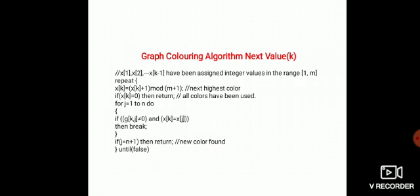After that, if j of k and i not equal to 0 and x of k equals x of j, then you have to check whether edges and nodes of k and j are assigned the same color. If j equals n plus 1, it will return that a new color is found for node k.